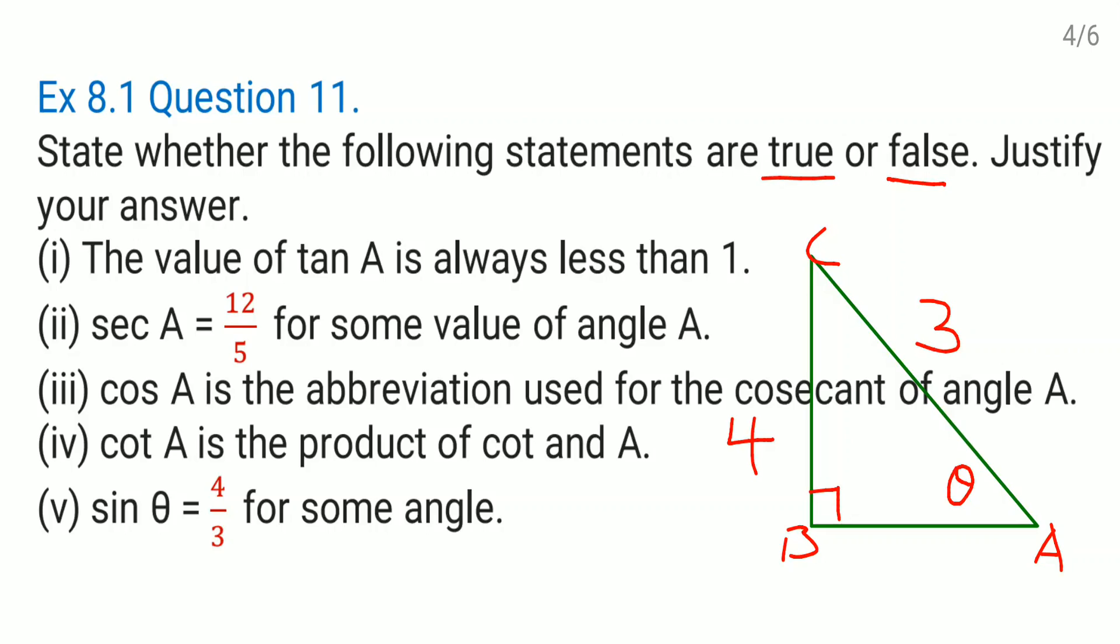No, because hypotenuse is the longest side in the triangle. So whatever the value they have given, that's a wrong value which is not possible. Sine theta is always smaller than one, not the bigger one. Okay, bigger than one.